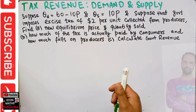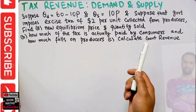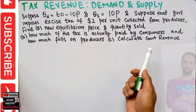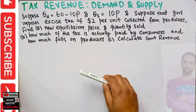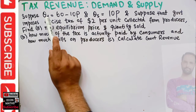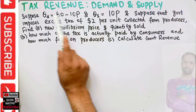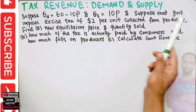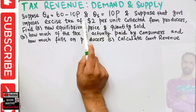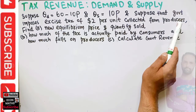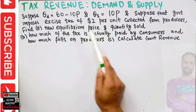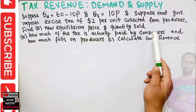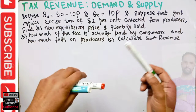In this video we will solve a question on how to find tax revenue from given demand and supply functions, and how to calculate the impact of a per unit tax on consumers and producers. The question is: suppose quantity demanded is 60 minus 10p, where q denotes output and p denotes price, and quantity supplied is 10p. The government imposes an excise tax of two dollars per unit collected from producers. Find the new equilibrium price and quantity sold, and how much of the tax is paid by consumers and how much falls on producers.